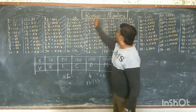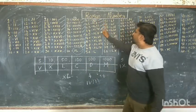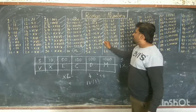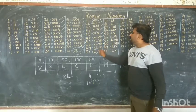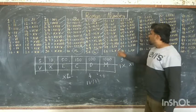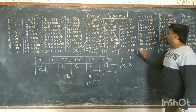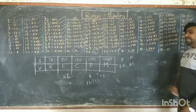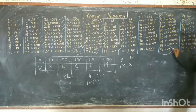This is 40. Then 41, 42, 43, 44, 45, 46, 47, 48, 49. It is 50. Then afterwards: 60, 70, 80. Now for 90: C means 100.